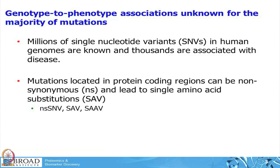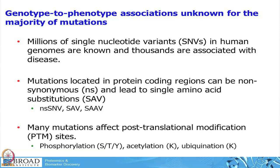There are many different synonyms for these events — non-synonymous SNPs, single amino acid variants — these all refer to the same kind of event and you will find all of these in the literature. Many of these non-synonymous single nucleotide variants affect sites or amino acids that can be post-translationally modified, like phosphorylation, acetylation, or ubiquitination.